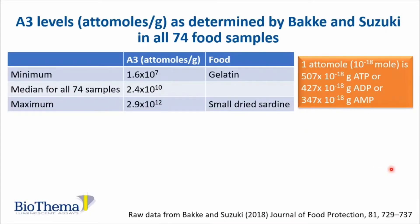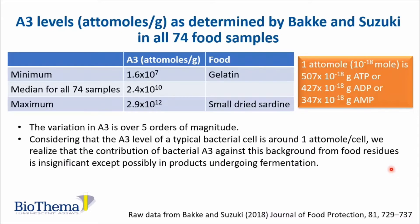ATP levels as determined by Bakke and Suzuki in all 74 samples show minimum, median, and maximum values. The variation in A3 is over five orders of magnitude between minimum and maximum. Considering that the level of A3 in a typical bacterial cell is around one attomole per cell, the contribution of bacterial A3 against this background from food residues is insignificant, except possibly in products undergoing fermentation.